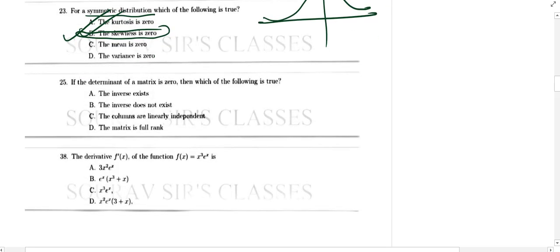So we are going for question number 25. The determinant of a matrix is 0. Then which of the following is true? So if the determinant of a matrix is 0, so the inverse doesn't exist. Because inverse comes with 1 by determinant into adjoint of A. That's the A inverse. You can't go for an inverse if this thing is not true.